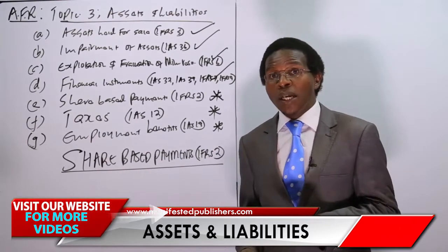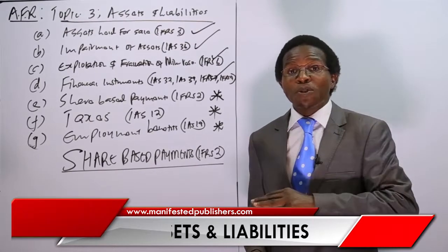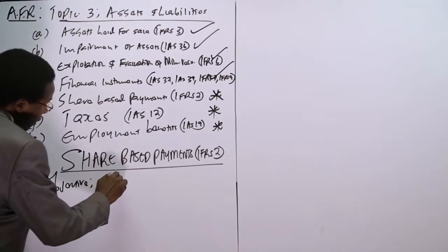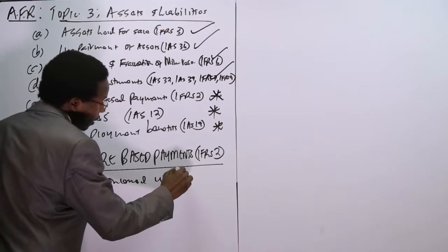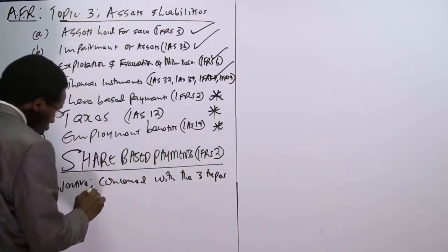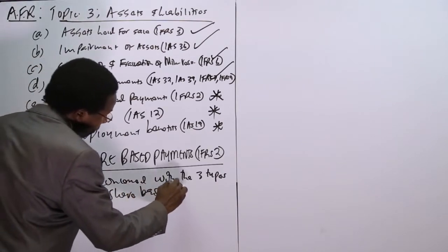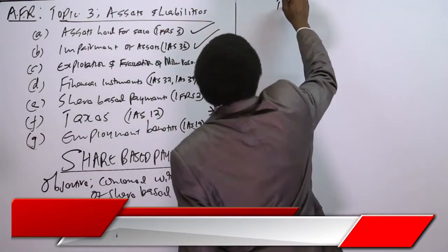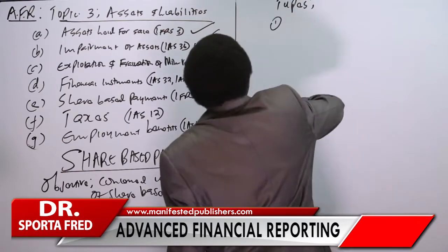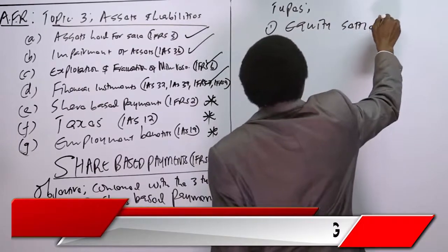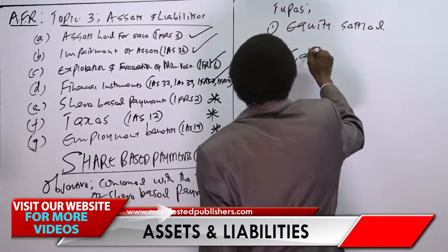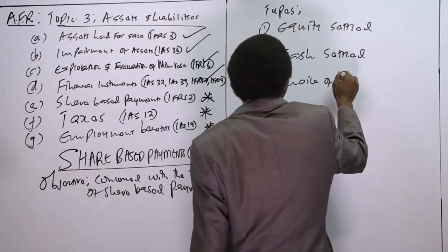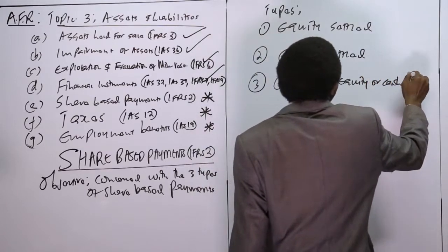The main objective of IFRS 2 is to deal with three types of share-based payments. One, we have equity settled. Two, we have cash settled. Three, we have choice — choice of equity or cash settled. Those are the main three types of share-based payments.